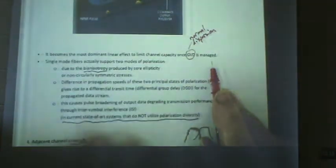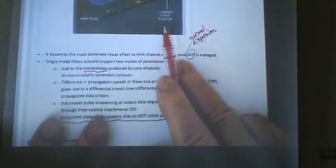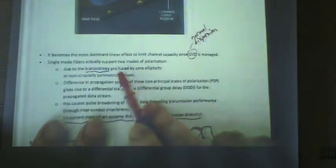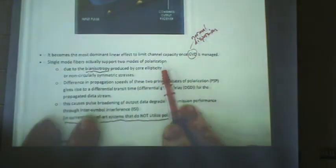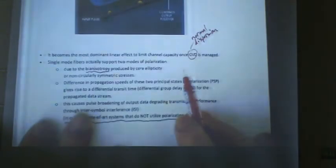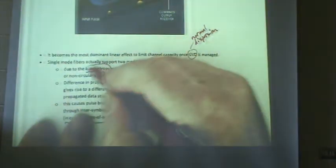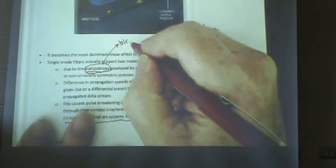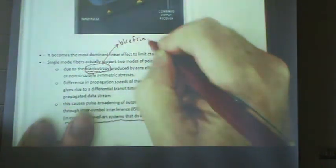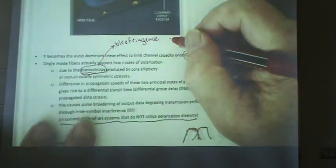Once the group velocity dispersion is managed, once that's been taken care of, PMD is the limiting factor. It becomes the dominant distortion. Single mode fiber will support both polarizations, can propagate in that. And then, this word by anisotropy. Next word, huh? I'm not going to simplify it much, but we're going to call that birefringence.